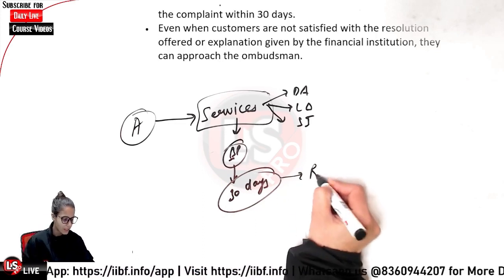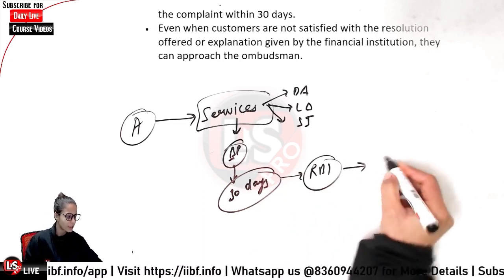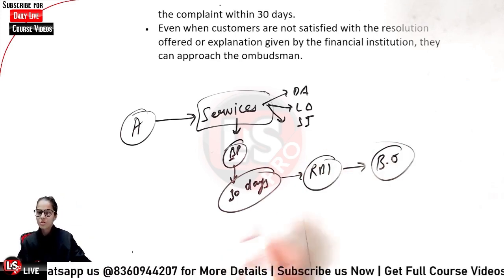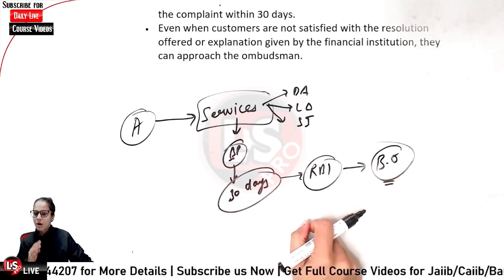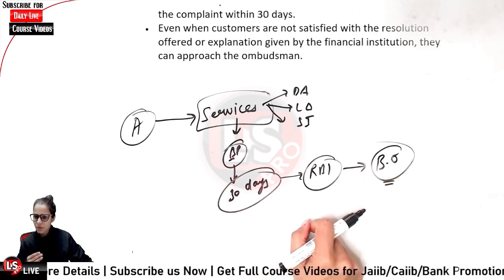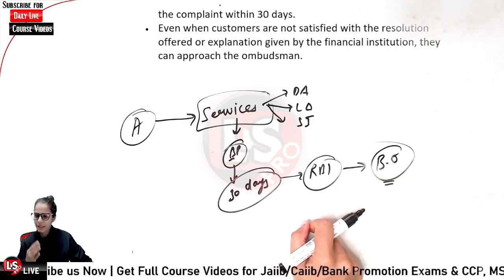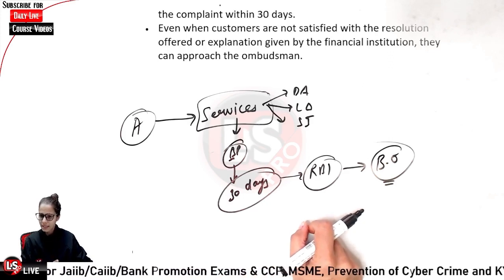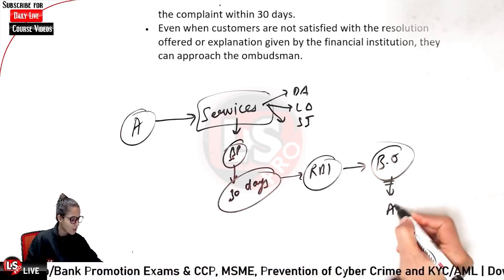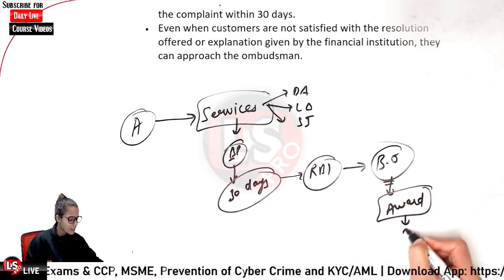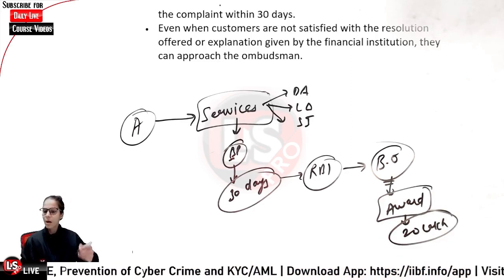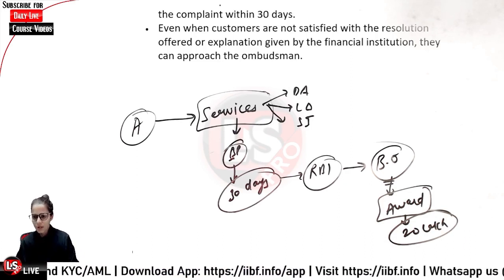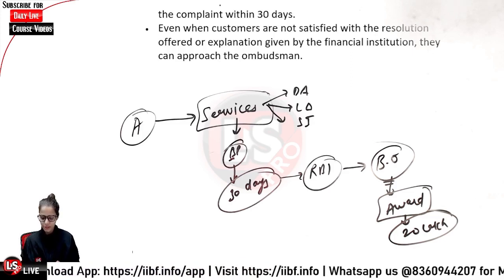In that case, RBI says that one person will be there known as the Banking Ombudsman, whom you can approach and they can declare an award. The maximum award is 20 lakh or the amount of loss, whichever is less. That compensation will be given to you. So the concept of Banking Ombudsman should now be clear.